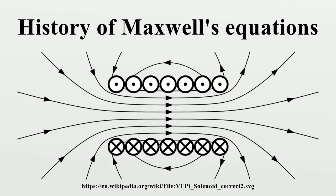The four equations used today appeared separately in Maxwell's 1861 paper On Physical Lines of Force. One equation in Maxwell's 1861 paper is ∇·B equals zero. Another equation is Ampère's circuital law with Maxwell's addition of displacement current — this may be the most remarkable contribution of Maxwell's work, enabling him to derive the electromagnetic wave equation in his 1865 paper, showing that light is an electromagnetic wave. Another equation is Gauss's law. Another equation expresses what Heaviside referred to as Faraday's law, which addresses the time-variant aspect of electromagnetic induction, but not the one induced by motion.